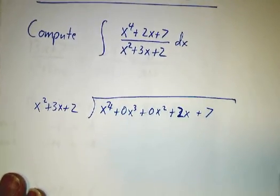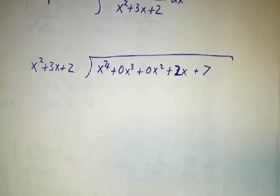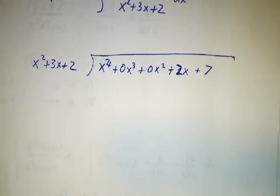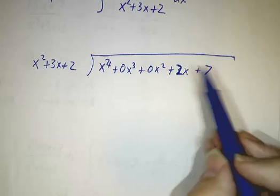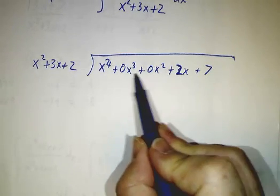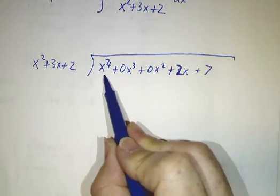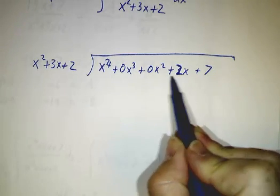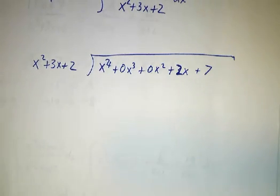The way you do long division with polynomials is the same as the way you do long division with numbers. It's just that instead of having a ones place, a tens place, a hundreds place, a thousands place, and a ten thousands place, you have a ones place, an x place, an x squared place, an x cubed place, an x to the fourth place.